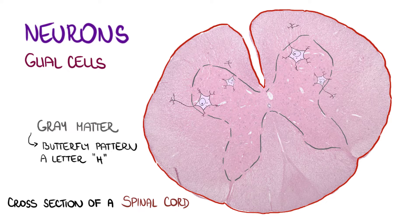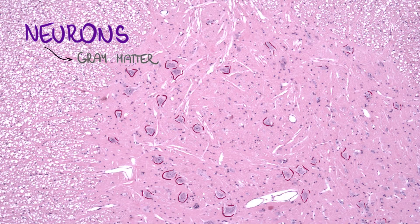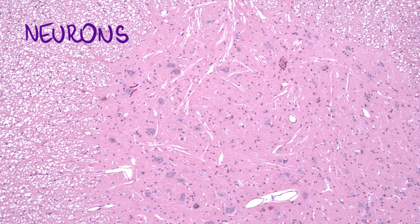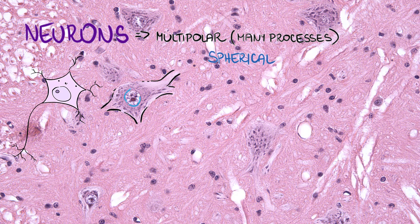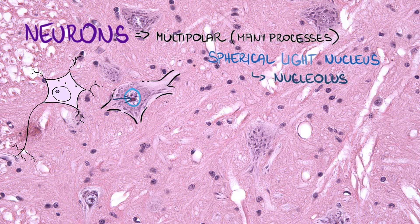Neurons can be found in gray matter only. They are multipolar, which means that they have many processes. A spherical, ovoid, light-active nucleus with nucleolus is typical, because neurons are very active cells in terms of production.